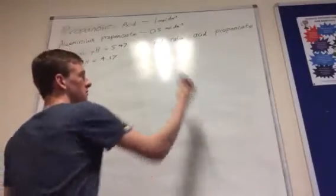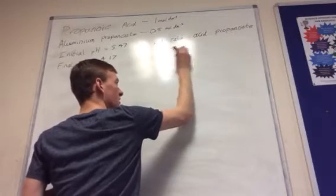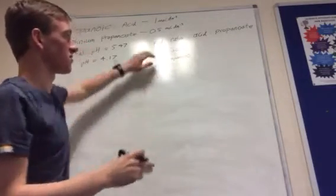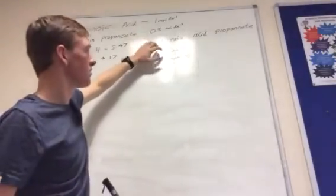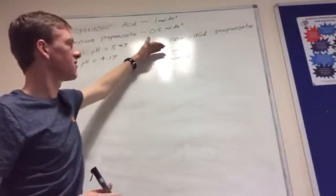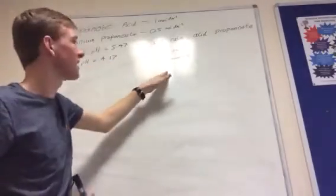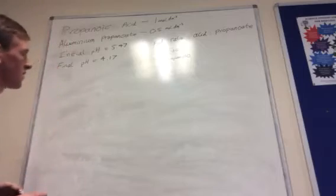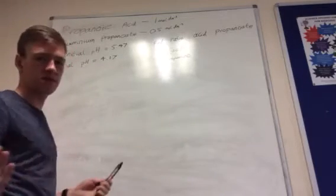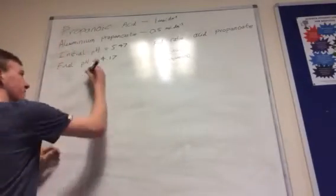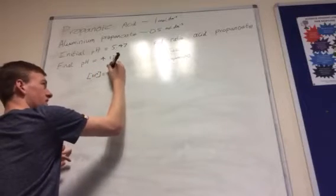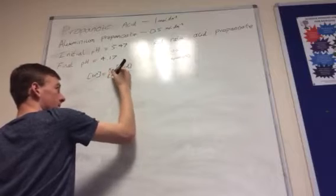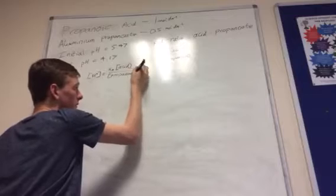Going back to the ratio, what we really want to find is the concentration of acid over the concentration of the propanoate. The reason is that if we have a ratio of 10 to 1, that means we've got 10 moles of acid for each mole of propanoate. So you can work out the ratios just from knowing what one divided by the other is. It's a buffer system, so we want to use the buffer equation: [H⁺] = Ka × ([acid] / [conjugate base]), where the conjugate base is the propanoate.